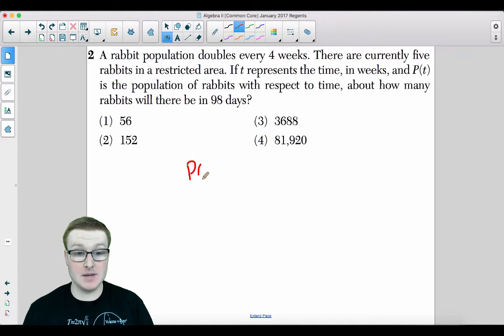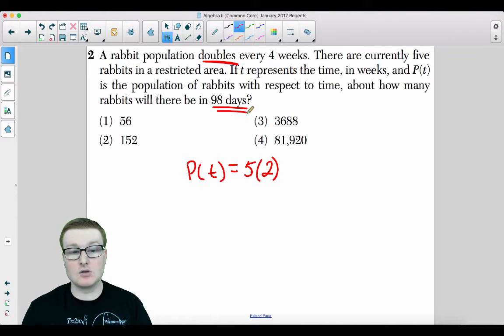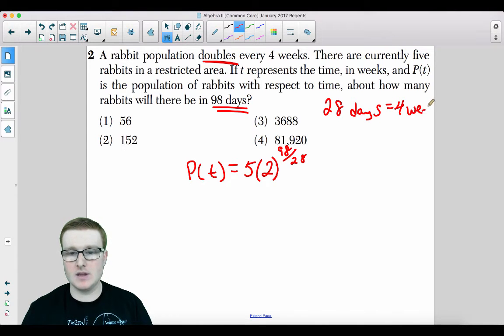Your formula to get this question right is P(t) equals the initial amount of rabbits, 5 rabbits. They are doubling, so that's 2 raised to the power. Now we're trying to find out how many rabbits will there be in 98 days. We actually need to divide the 98 days by 4 weeks because it doubles once every 4 weeks. So 98 divided by not 4, but 28 because there are 28 days in 4 weeks. You need to keep your units the same. You can't have days and weeks all in the same fraction.